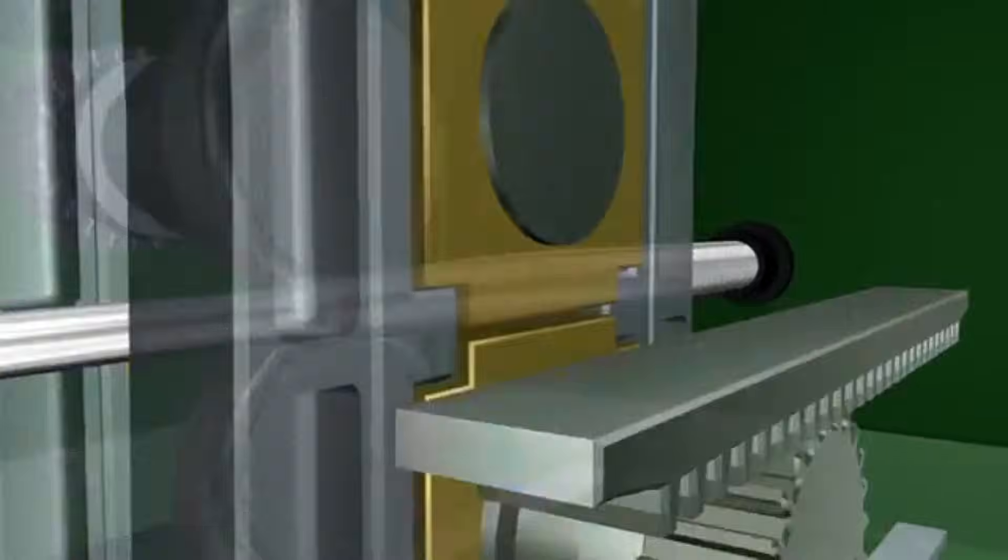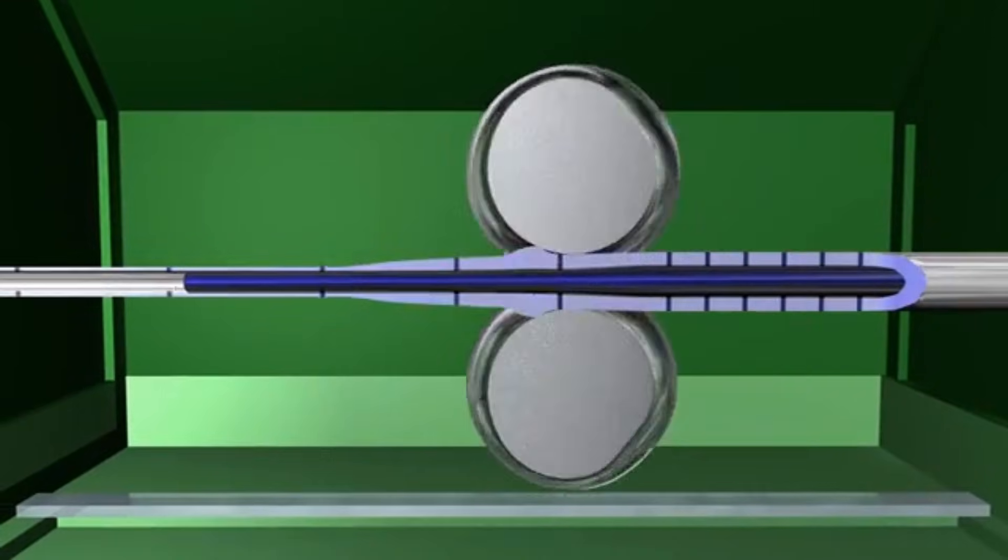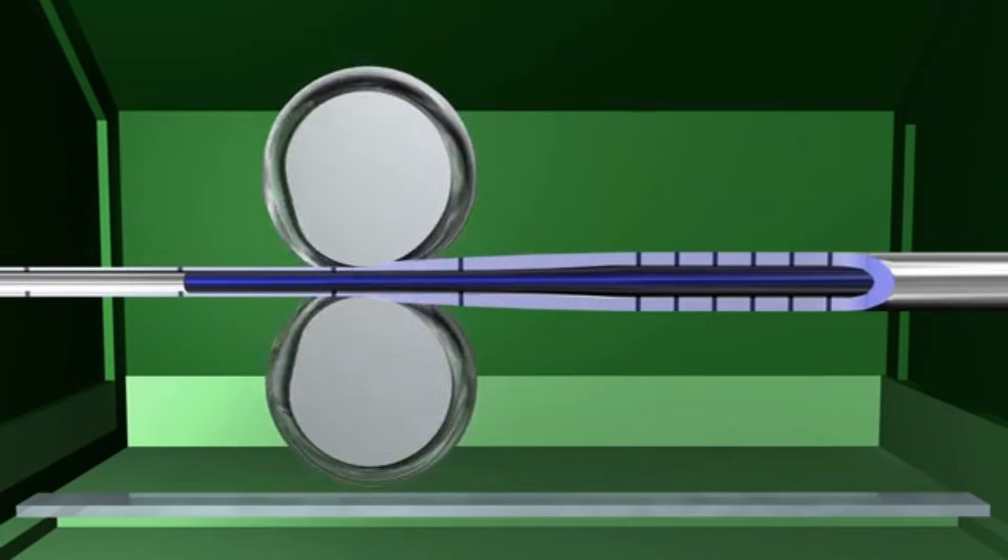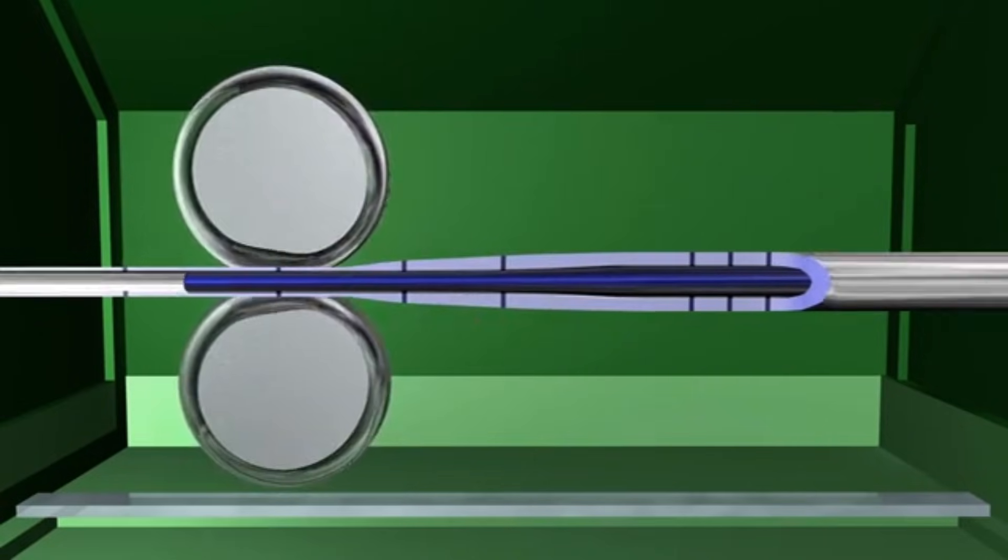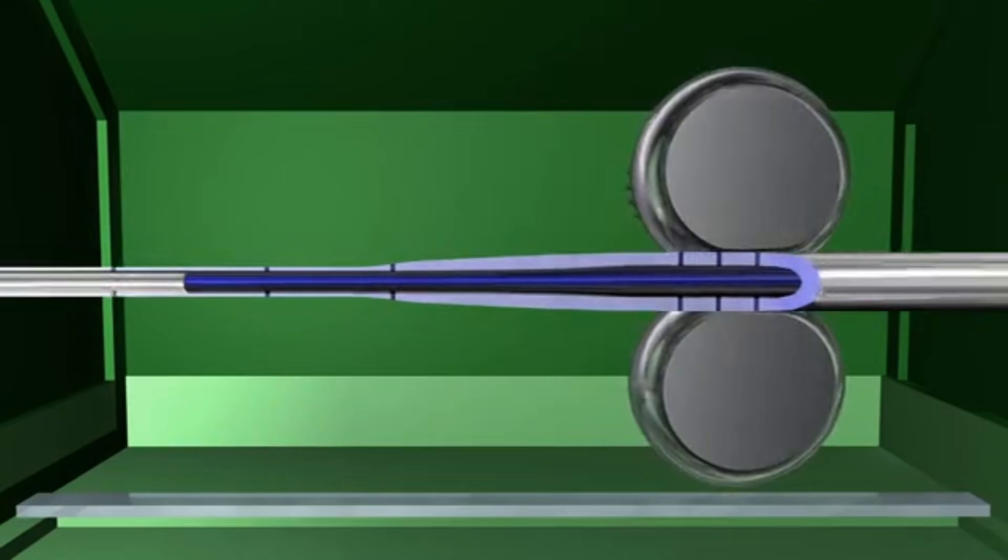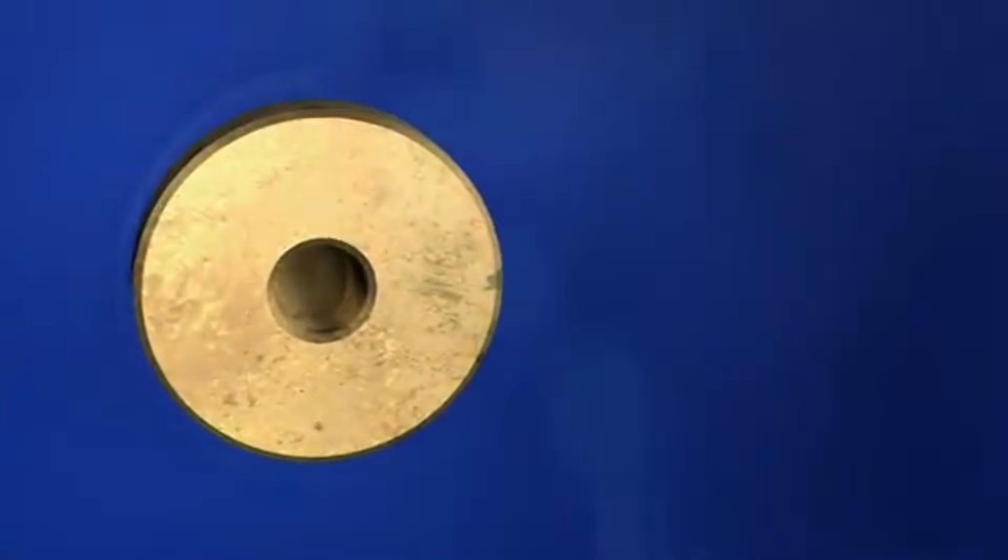In this process, the extruded tube is pushed over a fixed, tapered mandrel while the pilger rolls cyclically reduce the tube cross-section. At the end of each stroke, the rolls disengage, and the tube is rotated by 60 degrees, ensuring uniform wall reduction and dimensional accuracy.